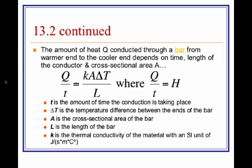The amount of thermal energy conducted through a bar or long object depends on the cross-sectional area A, the thermal conductivity constant K, and the difference in temperature between the two ends. A greater difference in temperature means more heat will flow, as the system wants to reach thermal equilibrium. It also depends on the length L of the bar. Q is the total amount of heat transferred.